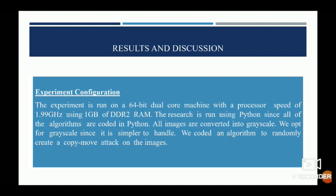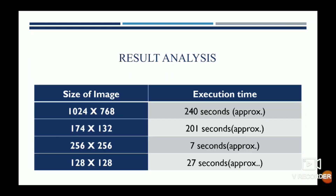The machine uses 1 GB of DDR2 RAM. The research is done using Python, since all algorithms are coded in Python. We coded an algorithm to randomly create a copy-move attack on images. Results showing the image size and execution time have been demonstrated.